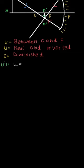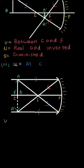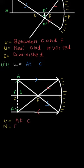Next, the third case: the object is kept at the center of curvature. The first ray comes parallel and passes through the focus; the second ray goes from focus and becomes parallel. The image is formed just below the center of curvature, totally inverted and the same size. So: object distance is at C, image distance is at C, nature is real and inverted, size is same size.